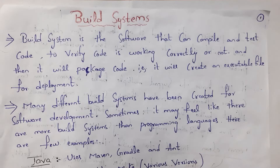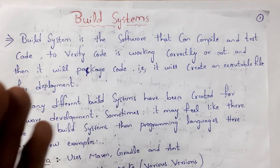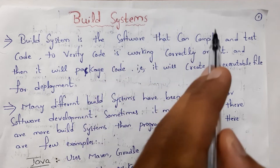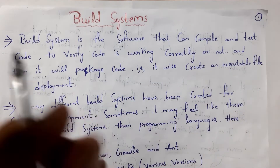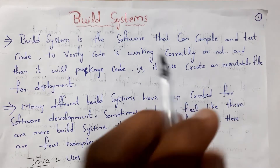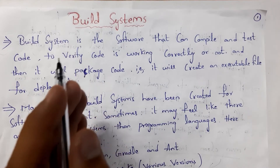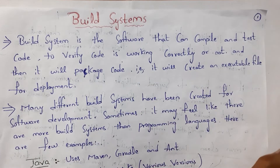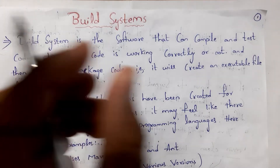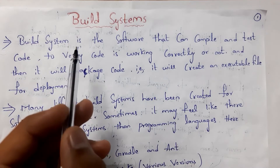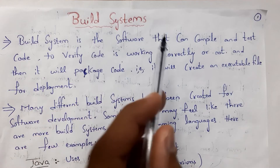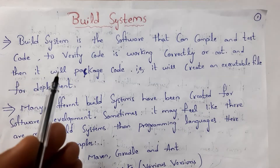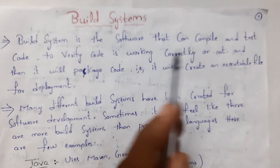Let's get started. First, I will explain what are build systems. A build system is software that allows us to compile code and also test that code. If compiling and testing is successful, then it will package that code — that is, it will create one executable file. We can then place that executable file in a server. Placing our executable file in a server is known as deployment. So a build system is software that can compile and test code to verify it is working correctly, and then package it by creating an executable file for deployment.